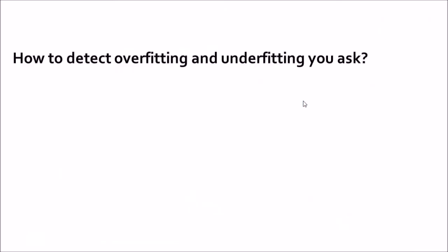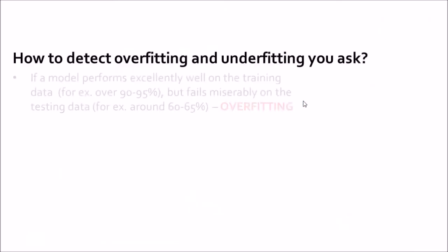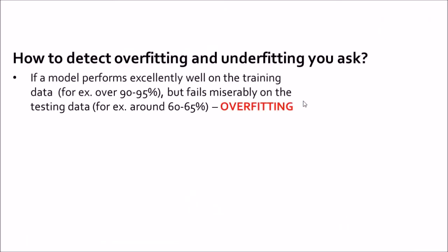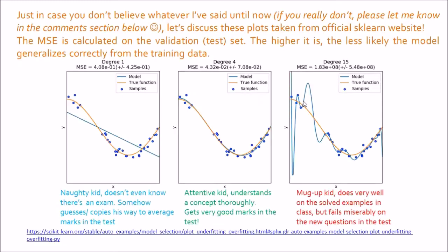How do we detect overfitting and underfitting? If a model performs excellently well on the training data — say 90 to 95% — but fails miserably on the testing data — around 60 to 65% — then we are definitely overfitting. It was achieving a very good result on training data but failed on testing data, just like the mug-up kid.